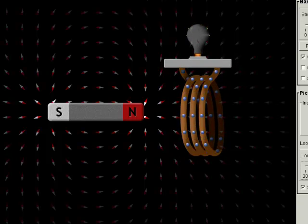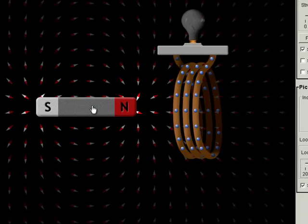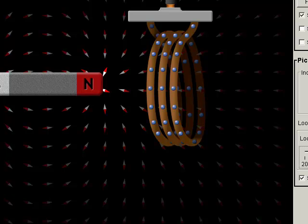Also, if I change the area, the light bulb turns on just very briefly, very dimly, as I change the area that the magnetic field passes through.